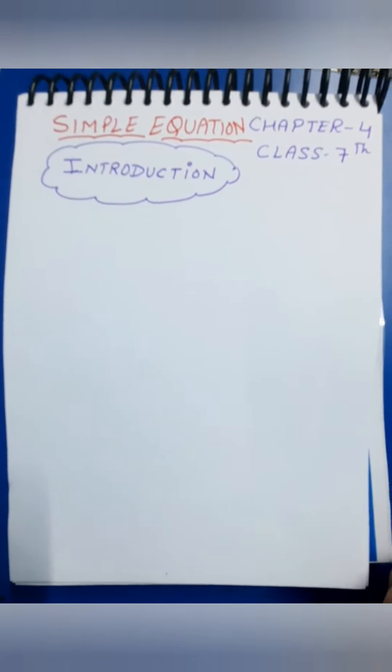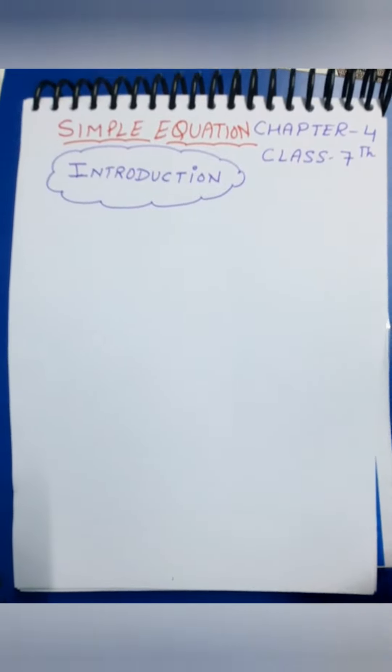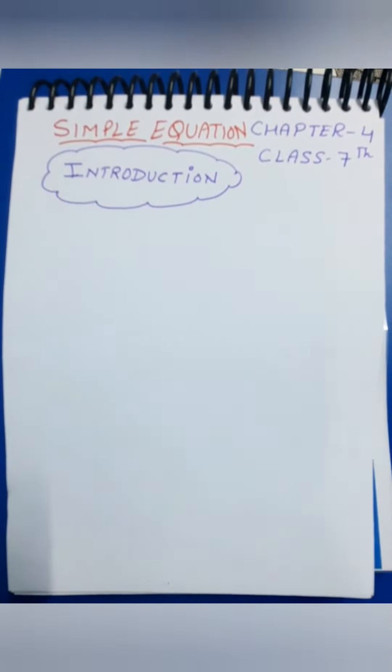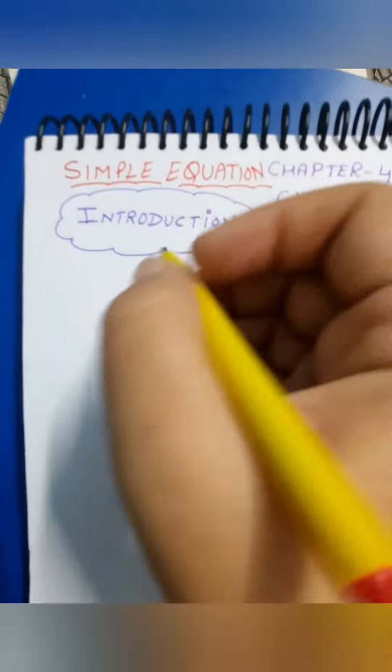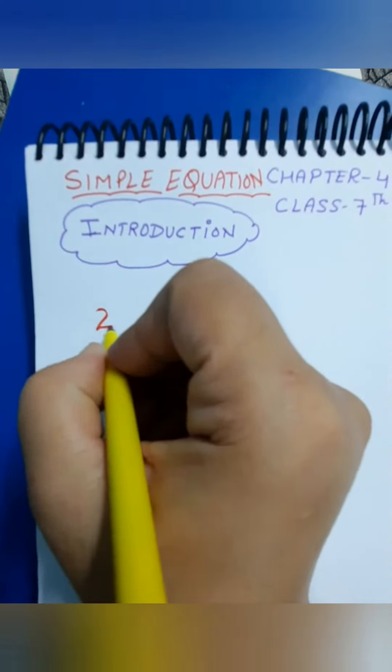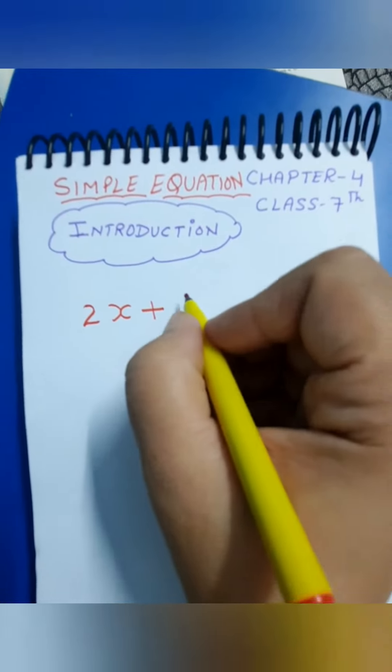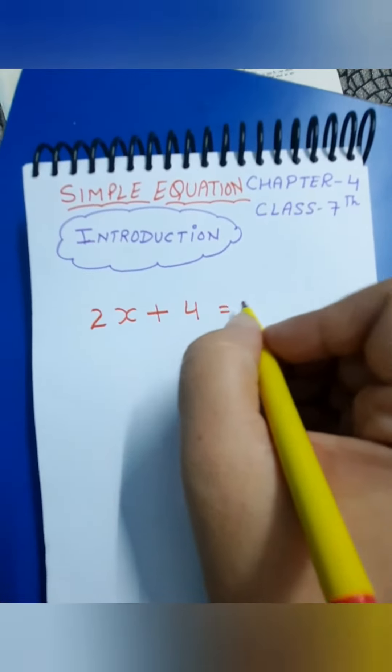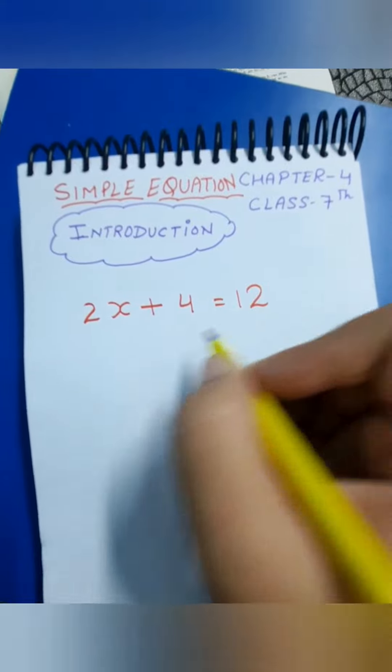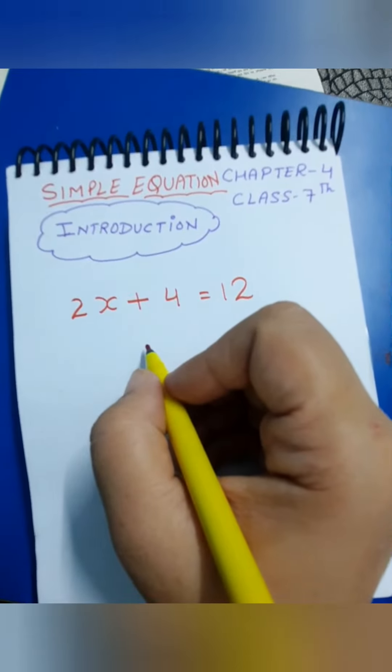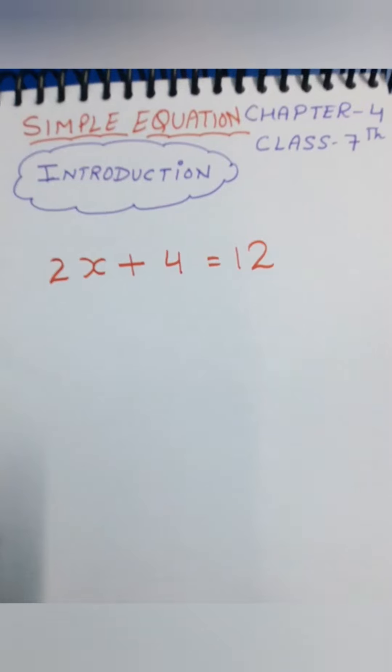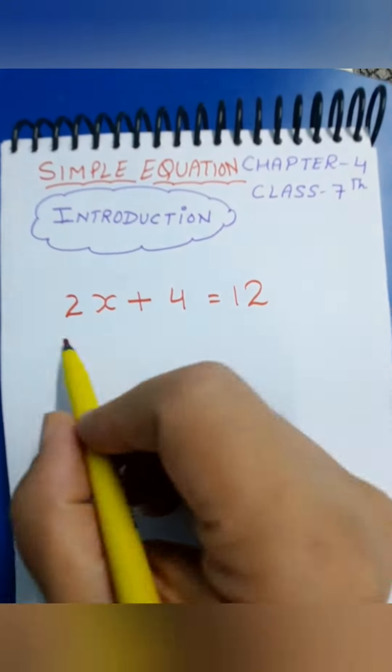Okay, so let's write an equation. 2x plus 4 is equal to 12, right? It is a simple equation. See, it is an equation, 2x plus 4 is equal to 12.